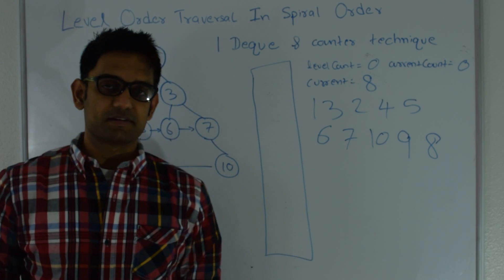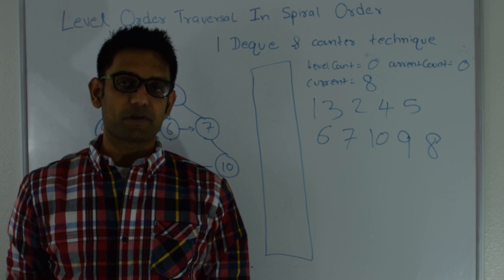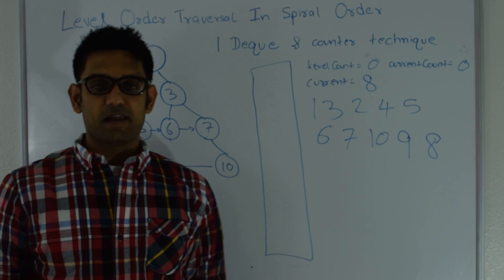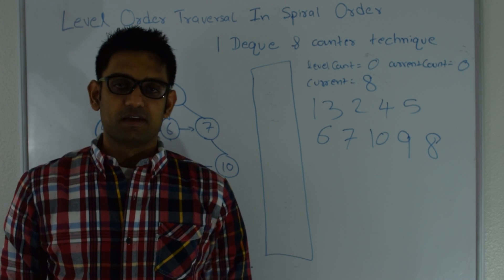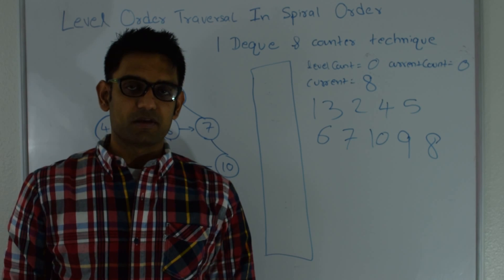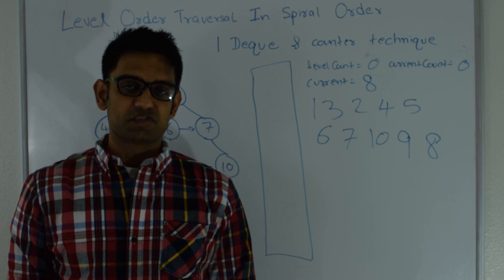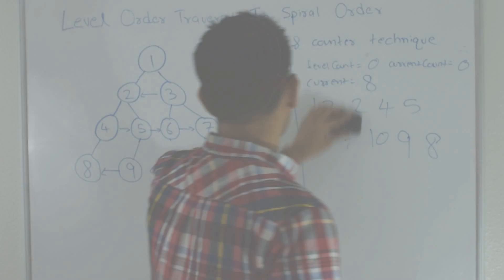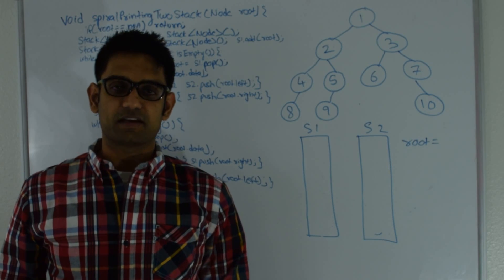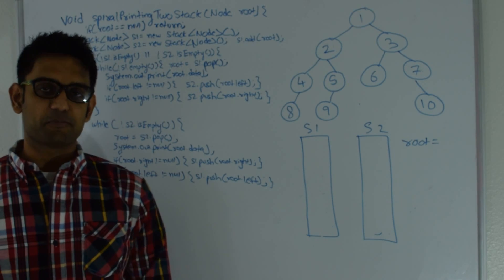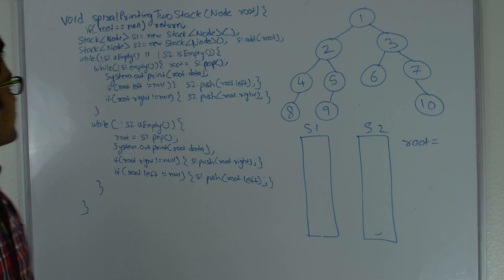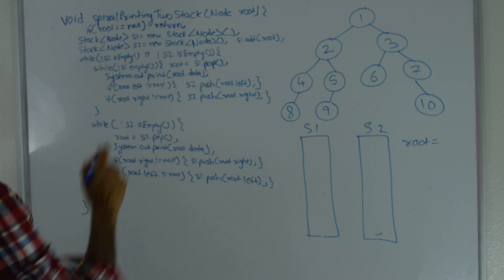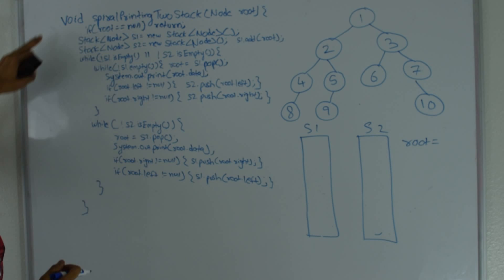All three techniques have a space and time complexity of O(n). If you're confident writing code from any of these three techniques, you're welcome to stop watching here. If you want to check out the code for one of the techniques, just stay on. Here I have the code for the two-stack technique.